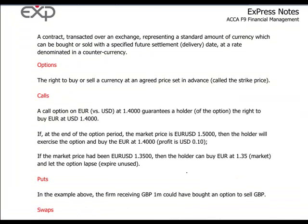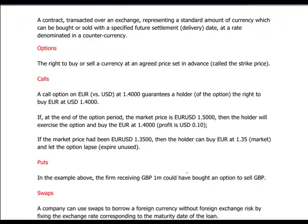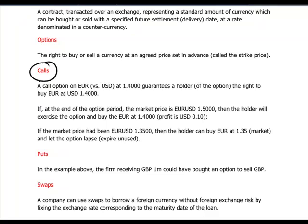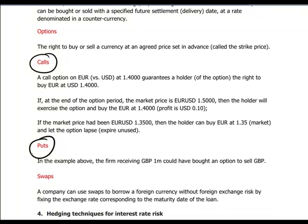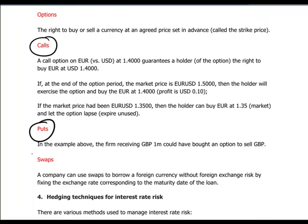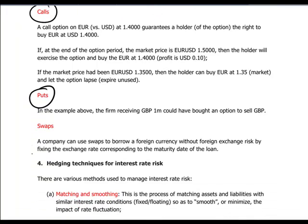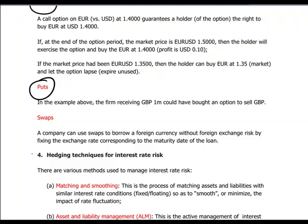Futures contracts can also be used for hedging purposes, as can options. Options are defined precisely: a call option is the right to buy a currency, and a put option is the right to sell the currency — there is a symmetry here which the student needs to be aware of. Swaps would be another way in which a company can borrow foreign currency without incurring foreign exchange risk, by borrowing foreign currency and returning it at the maturity date without incurring a gain or loss on foreign exchange.